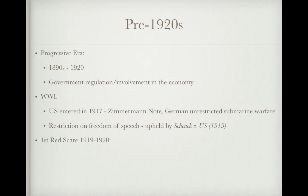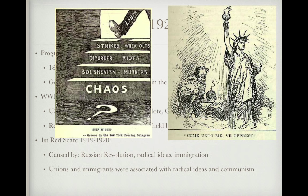At the conclusion of the 1910s, we have the First Red Scare — it's called the first because there is a second one. This was caused by a few things: the Russian Revolution, in which Russia turned communist; the emergence of radical ideas in the country; and immigration. Unions and immigrants were associated with radical ideas and communism. A political cartoon shows a European anarchist — someone against government — with a knife and bomb, sneaking past the Statue of Liberty, suggesting he would come and do damage to the United States.